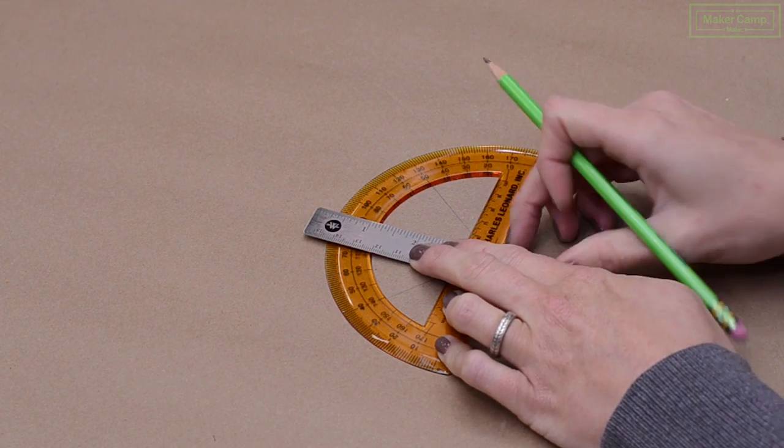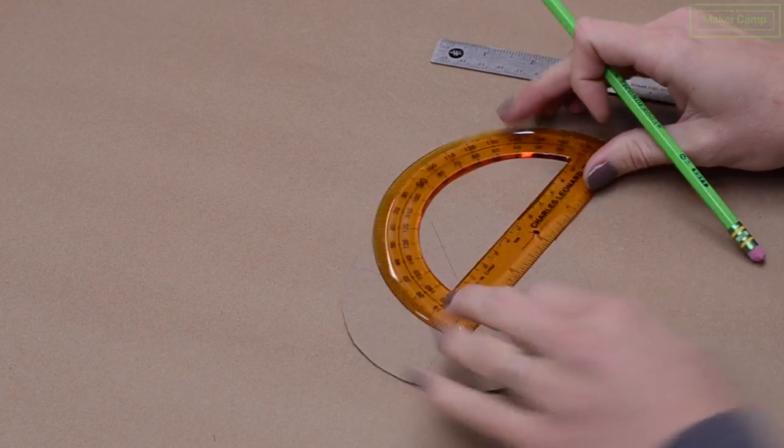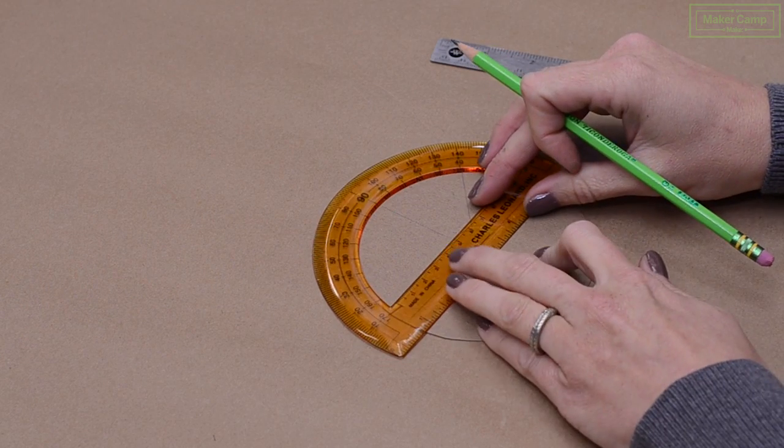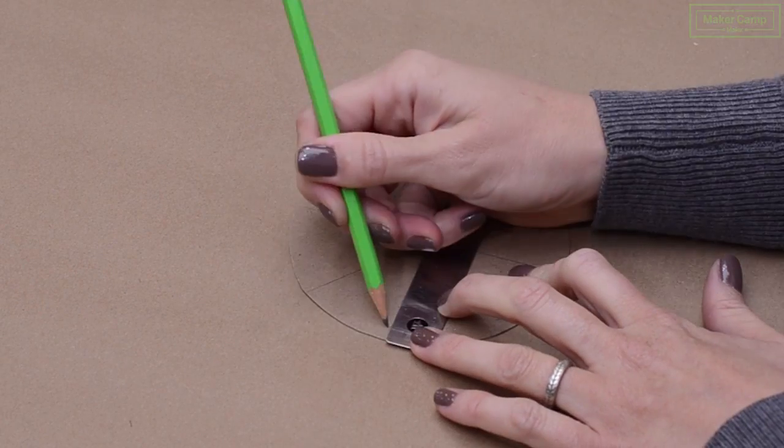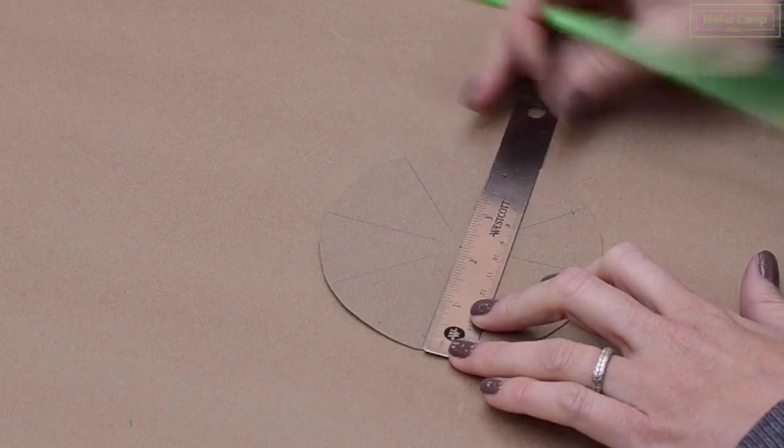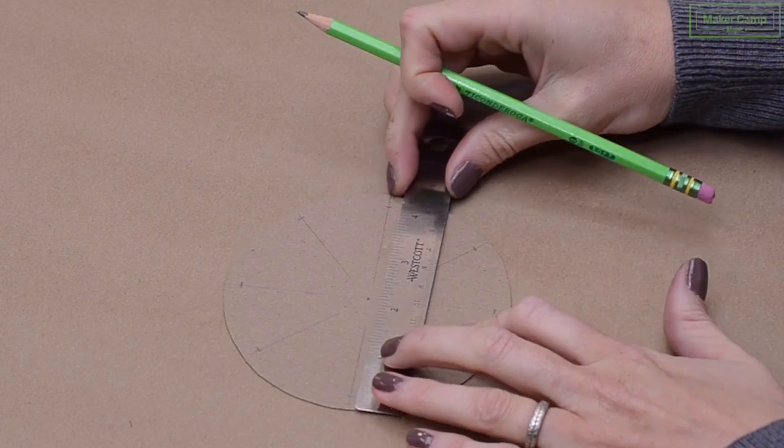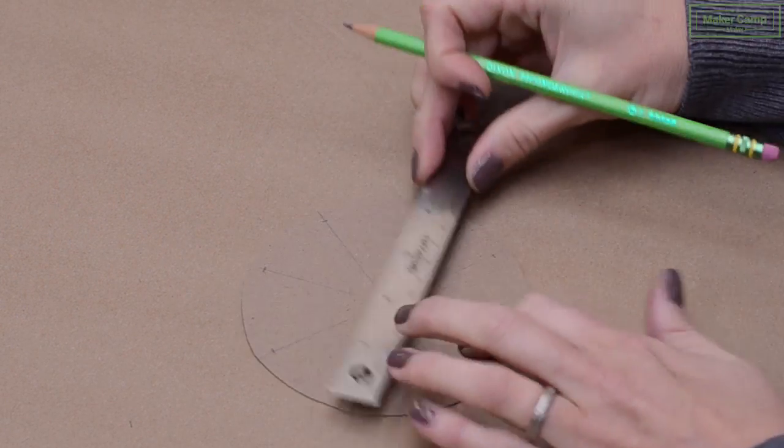Using a protractor and a ruler, divide your circle into eight equal parts. And you want to mark down about a quarter of an inch from the edge on each line and then up from the center on each line about a quarter of an inch.